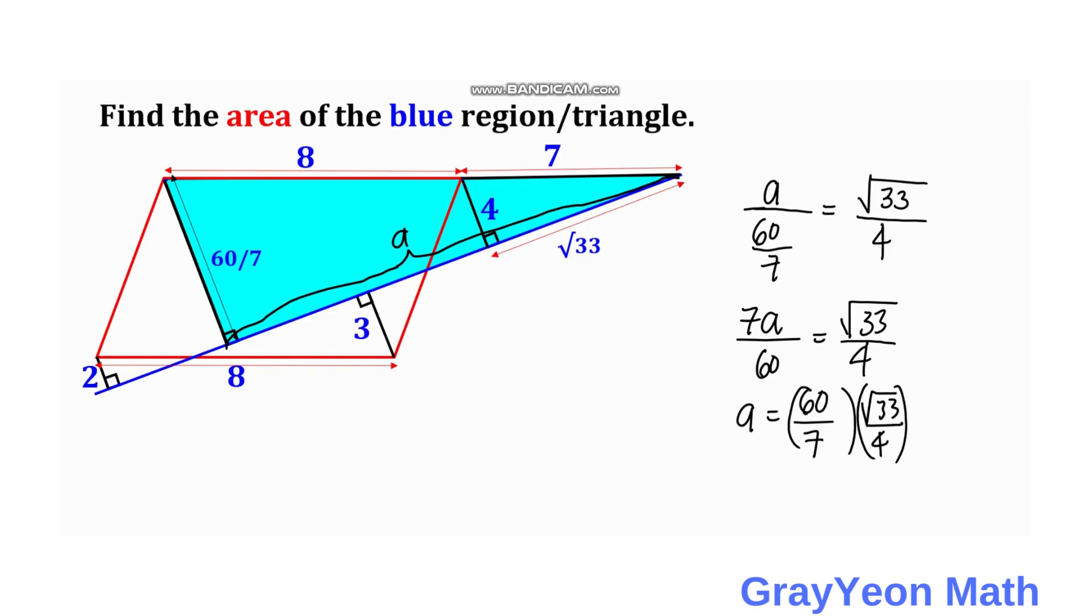Or if we simplify further, we have 15. So a is equal to 15 square root of 33 over 7 units.